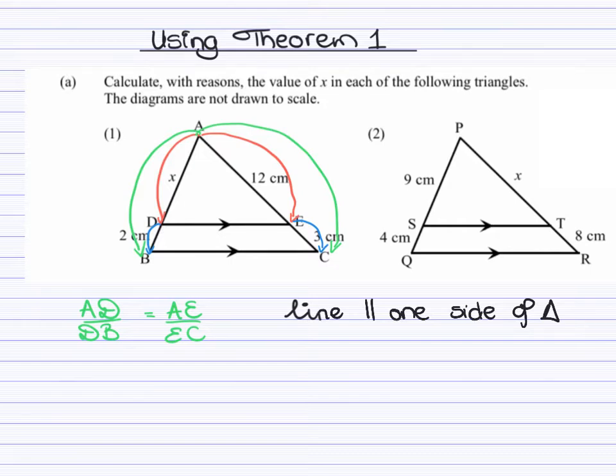In the next step, we will substitute in the values that we have into those ratios. So the length of AD is X. The length of DB is 2 centimeters. That should be proportional to the length AE, which is 12 centimeters, divided by EC, which is 3 centimeters. We can now solve for X. You can do this using your cross multiplication method or your balancing method. X would therefore be equal to 8 centimeters.